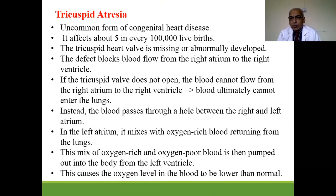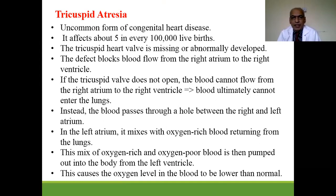The second cyanotic heart disease is tricuspid atresia. It is an uncommon congenital heart disease affecting about 5 in every 100,000 live births. The tricuspid valve is missing or abnormally developed, blocking blood flow from the right atrium to the right ventricle, so blood cannot enter the lungs.